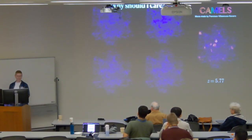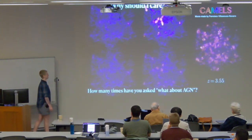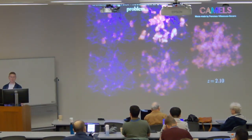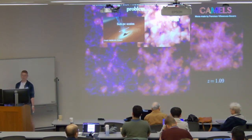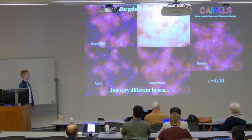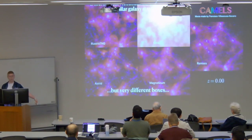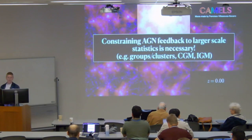Why should you care? How many times have you heard — or maybe asked — what about AGN feedback, and never get a satisfying answer? That's because AGN feedback is very poorly constrained. It is a multi-scale problem: you go all the way down to subparsec scales at the accretion disk, up to megaparsec scales where the shortest jets could reach out to the IGM. Different AGN feedback models can produce very similar galaxy statistics — you can see five different subgrid models here that all reproduce galaxy statistics pretty decently, but they have very different physics.